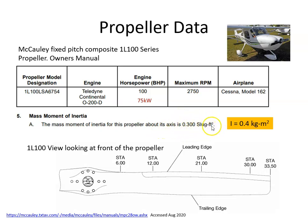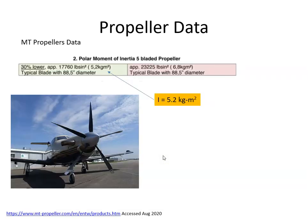On the data sheet it gives the moment of inertia at 0.3 slugs per feet squared, which when I convert it becomes 0.4 kilogram meter squared. On the MT propeller website they have a five-bladed propeller and the moment of inertia is 5.2 kilogram meter squared.